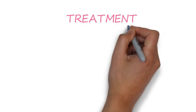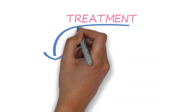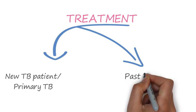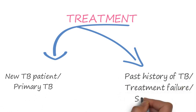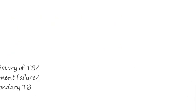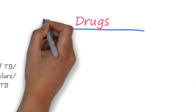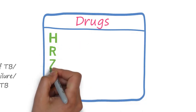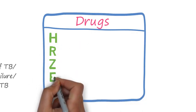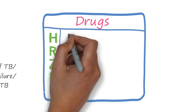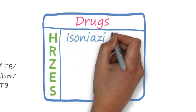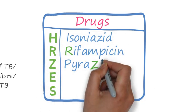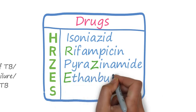The treatment method varies between a new patient infected with TB for the first time and a patient who already has a history of TB. The drugs used in TB treatment are isoniazid, rifampicin, pyrazinamide, ethambutol, and streptomycin. The letters H, R, Z, E, and S are used for them respectively.